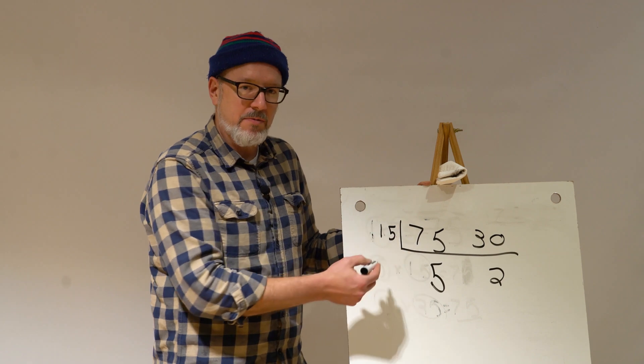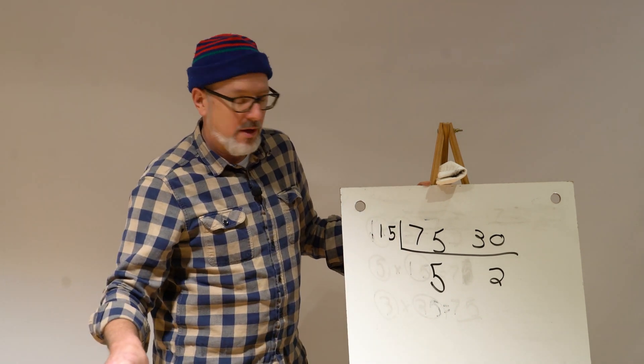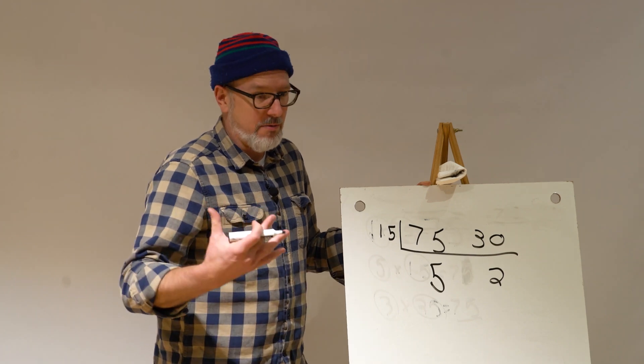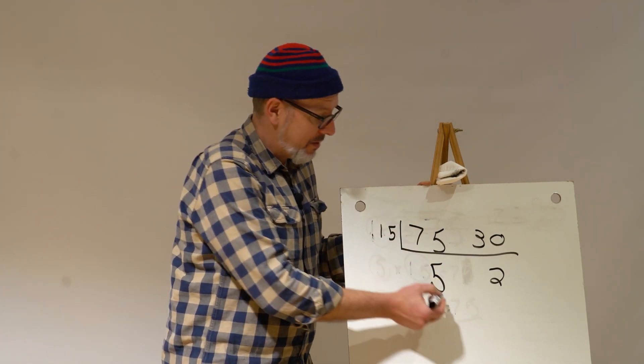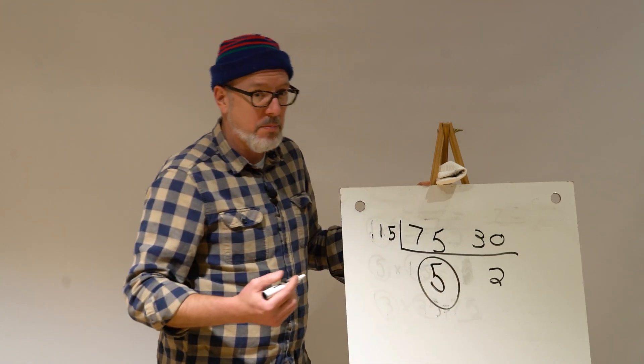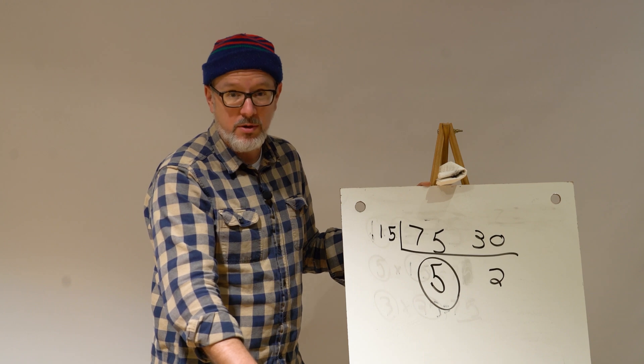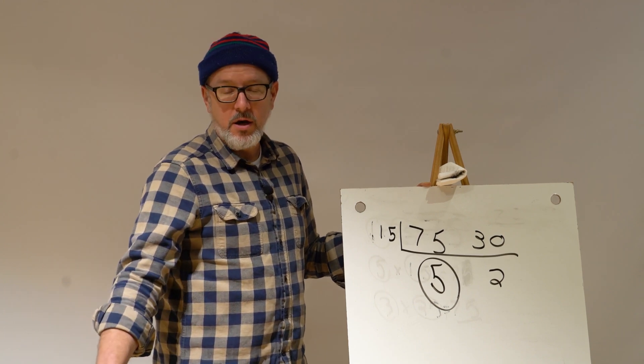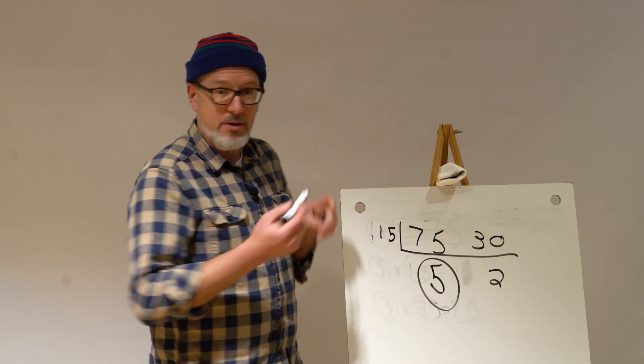If I take the greatest common factor of the wheel teeth and the ring teeth, and I divide the ring teeth by it, that'll tell me how many points our hypotrochoid will have. So when I use the 30 teeth wheel on the 75 teeth ring, I will get a shape that has 5 points. All right, you ready to check it out?